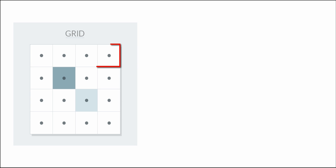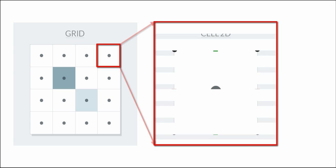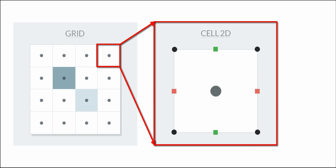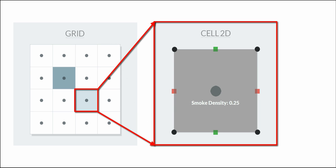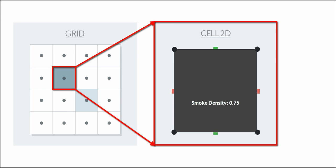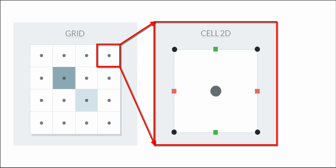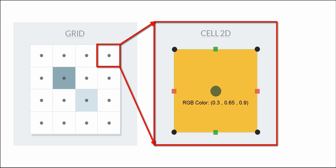Let's take a closer look at a grid cell. If we assume this is a smoke grid, what we see here is an empty cell. Adding some smoke density, it would store a value of 0.25, so 25 percent filled. If we go higher with that value, we see it is now much denser and about 75 percent filled. The same happens for colors — there are just three floating point values, three scalars, stored in the cell which are then interpreted as color.